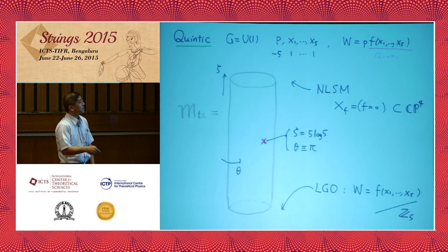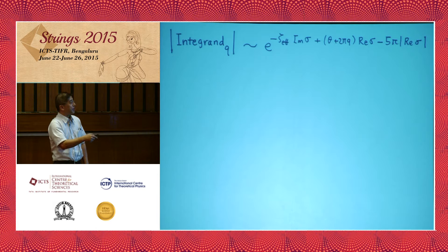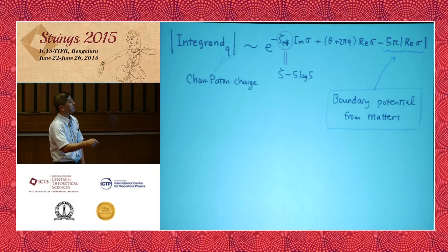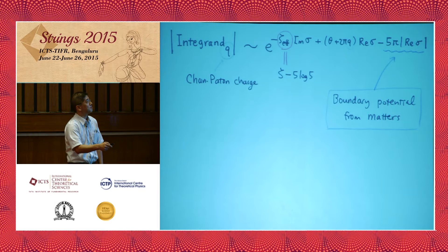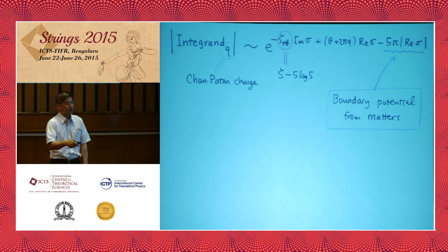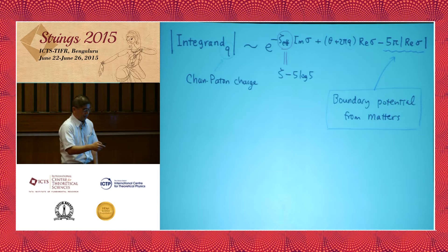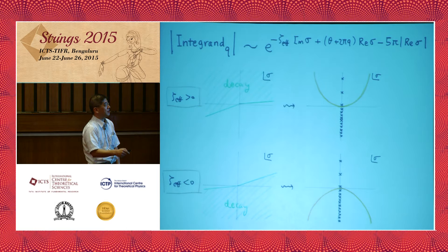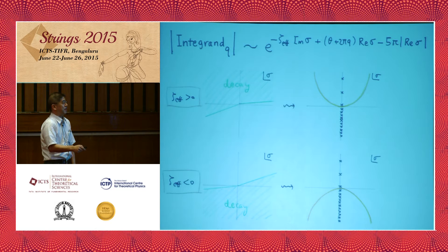For this model, the integrand of the hemisphere partition function contains a term corresponding to the Chan-Paton gauge charge Q. This part comes from the classical part — except for a finite shift, which is the quantum correction. The most important quantum correction comes from a damping factor from the gamma function, obtainable by Stirling's formula. This exponent can be interpreted as a brane potential induced from the matter multiplet. When the effective zeta is positive, the convergent region is essentially the upper half-plane for any choice of Q, so choosing the contour in this region works. When the effective zeta is negative, one just has to choose the lower contour. These are the master contours.